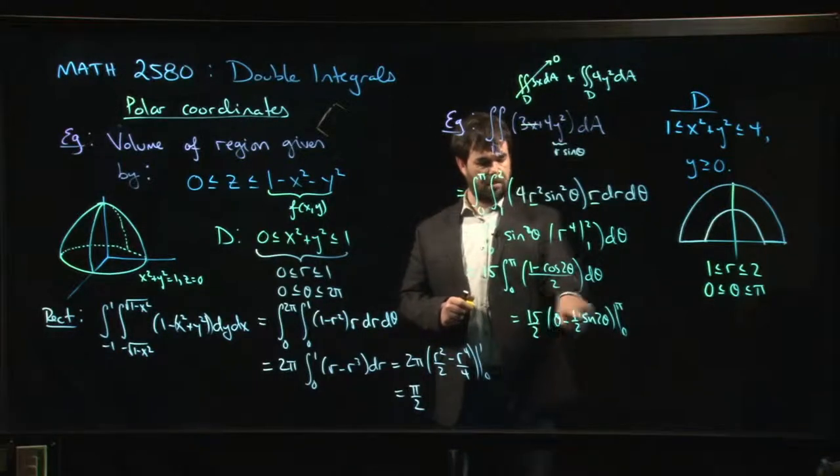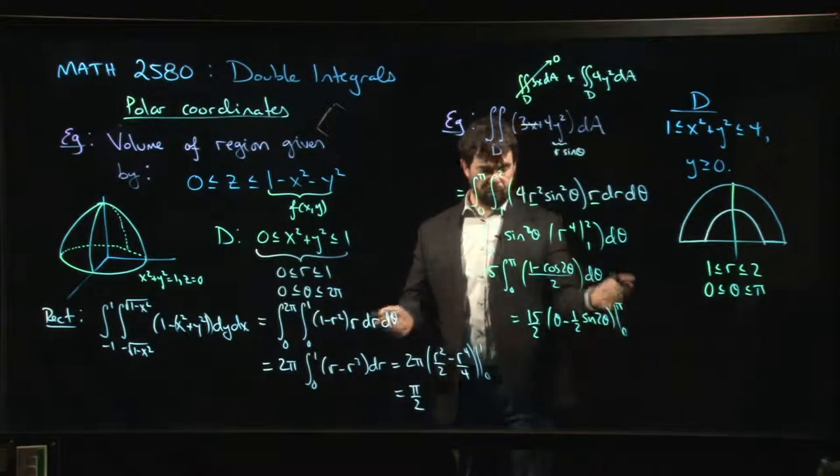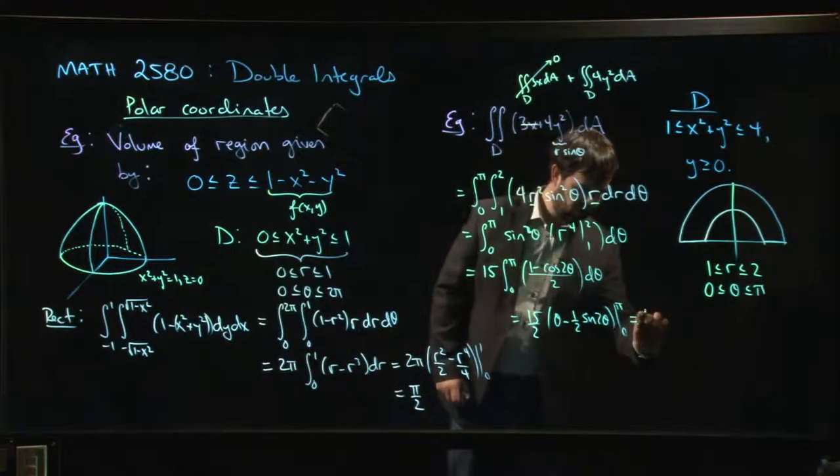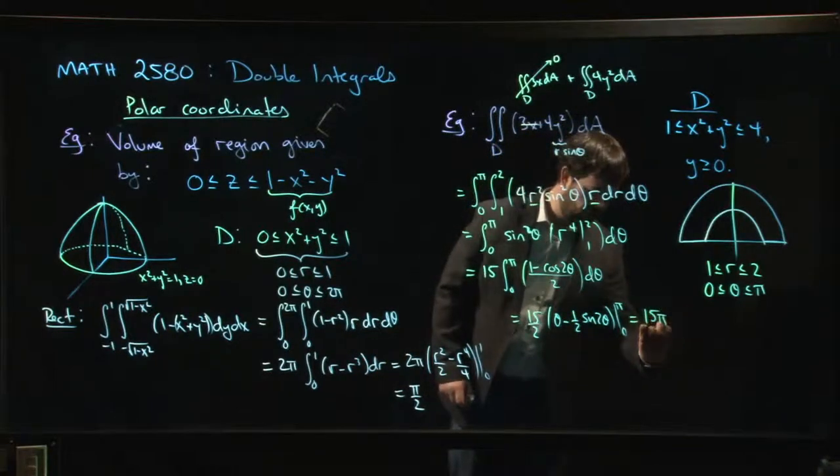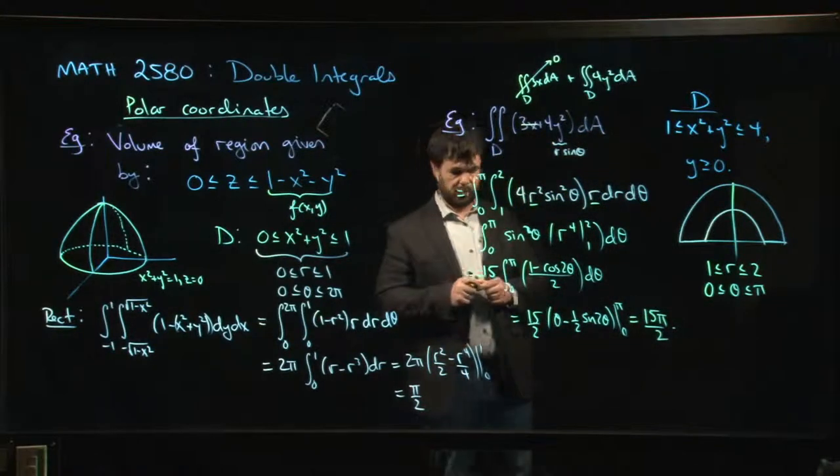So here we're just going to get a π. π minus 0. Here it's going to be either sine 2π or sine 0. Both of those are 0, so like I said, this doesn't contribute. We're just going to get 15π over 2. And then we're done.